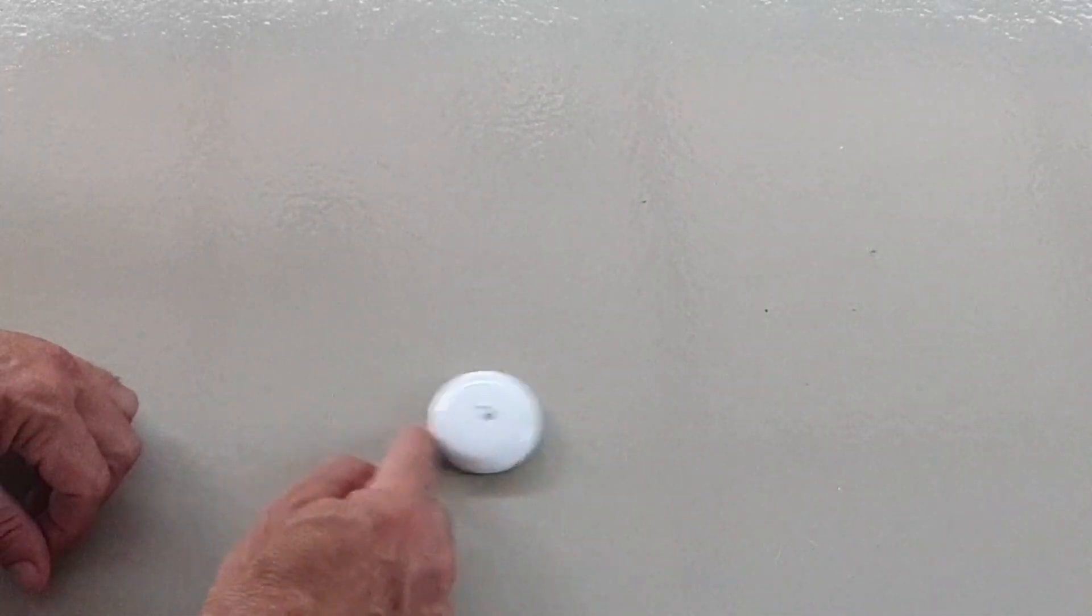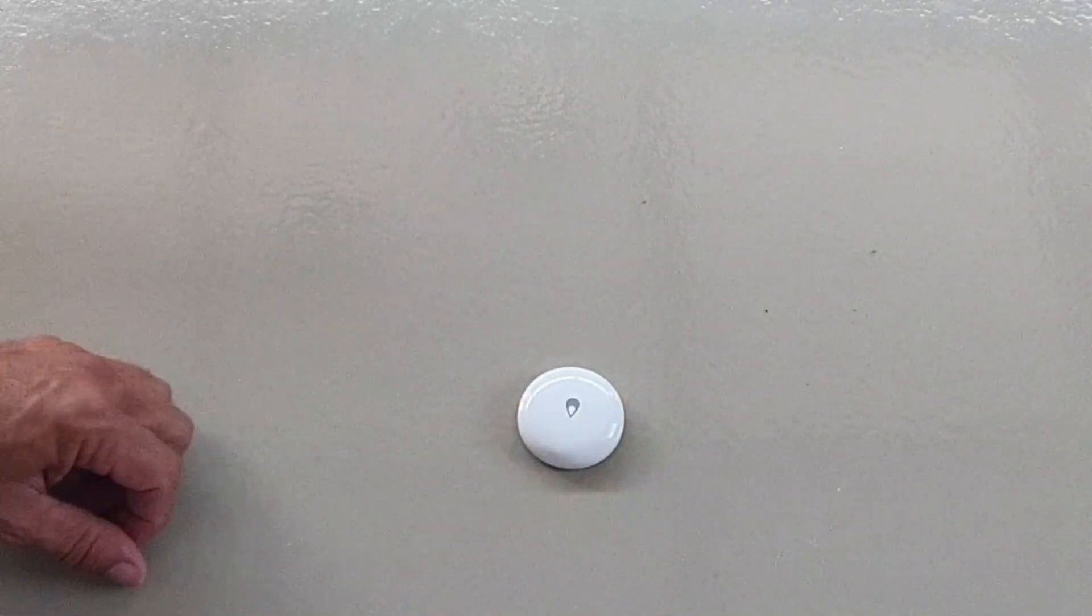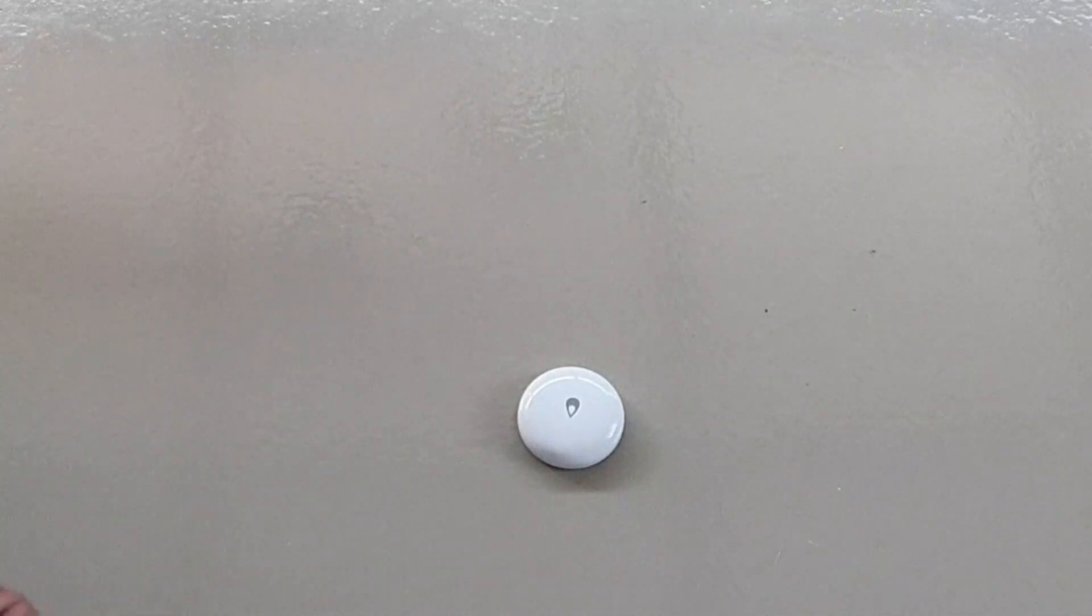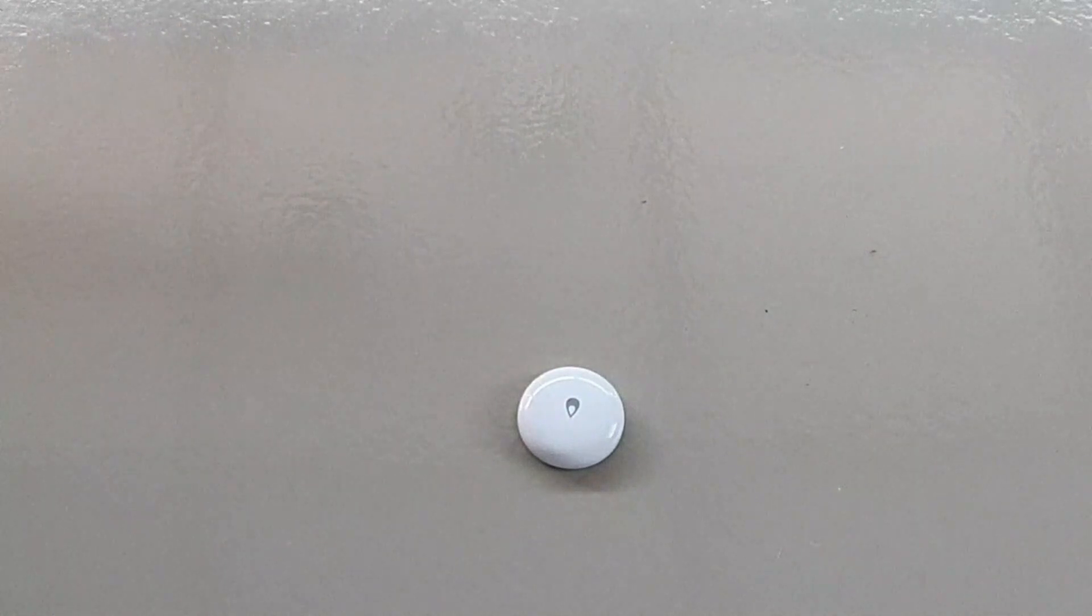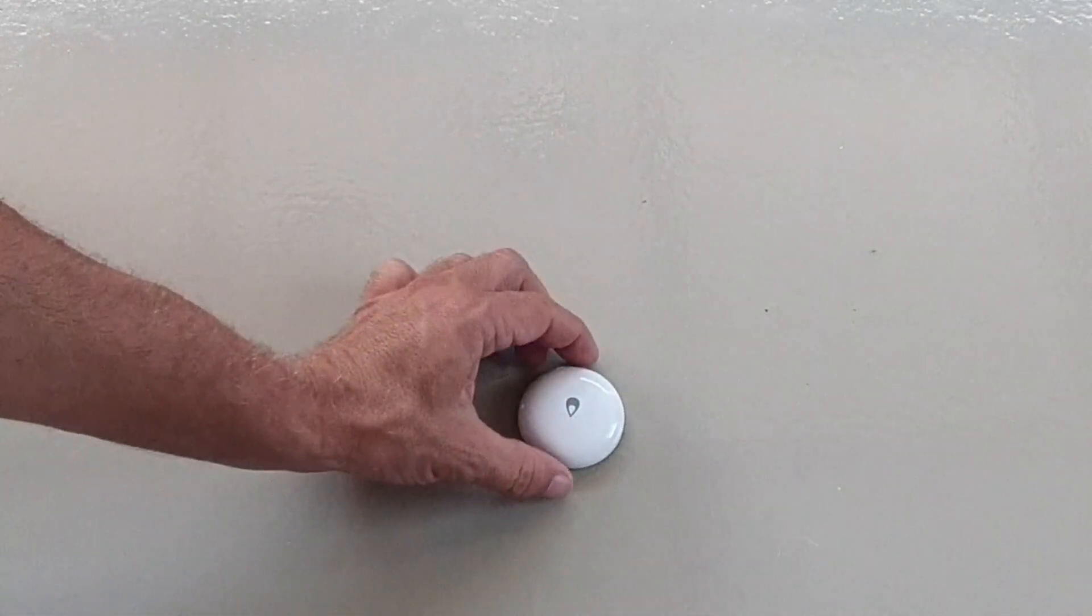The unit slides around quite easily. I usually use a bit of sticky-back Velcro to fix it in place. The sensor has a button underneath the water drop, and I need to press this button.